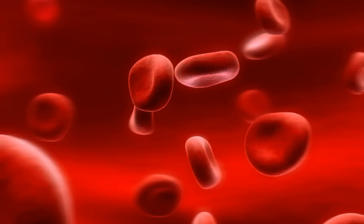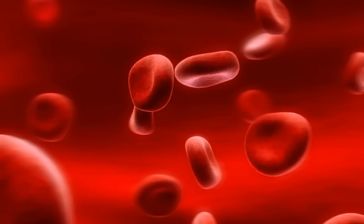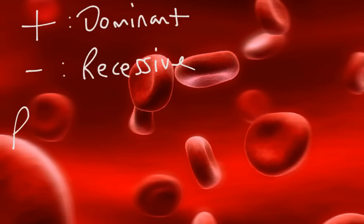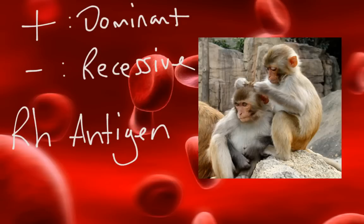Now let's talk about one other aspect of blood type. You've probably heard of somebody being type A positive or O negative rather than just type A or O. The positive and negative refers to a completely dominant trait — positive is dominant and negative is recessive. This is called the Rh antigen. It was first discovered in the rhesus monkey, which is why we call it the Rh antigen.